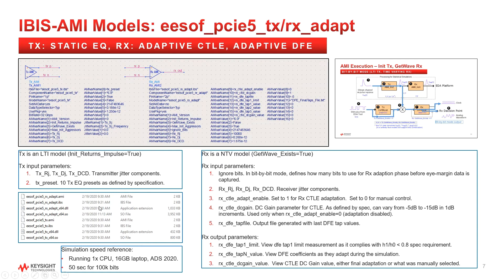The collection of files that make up the IBIS-AMI model set are shown in the file list at the bottom left. The IBS is the traditional IBIS analog model file. The AMI file contains the algorithmic parameters that were just discussed. Both of these files are plain text files that you can view in any text editor. The compiled code can be found in DLL and SO files — DLL for running in Windows operating system, SO for running in Linux operating system.